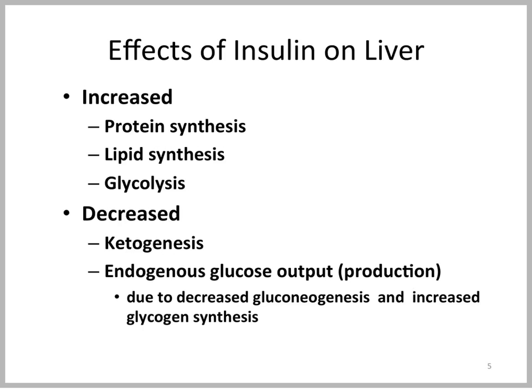The effects of insulin on the liver are, again, anabolic effects. We have an increase in protein synthesis, lipid synthesis, and glycolysis. Insulin will lead to decreased ketogenesis, and it will also decrease endogenous glucose output — meaning a decrease in blood glucose due to inhibition of gluconeogenesis. Insulin will inhibit both of these processes, and it will decrease gluconeogenesis and increase glycogen synthesis.